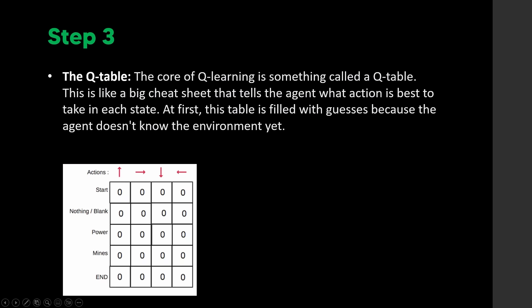Step three is the Q-table, which is like a big cheat sheet that tells the agent what action is best to take in each state. At first the table is filled with guesses because the agent doesn't know the environment yet and hasn't taken any actions.